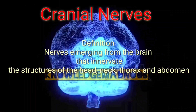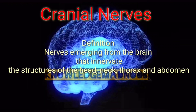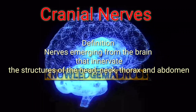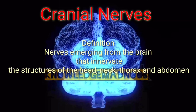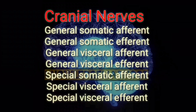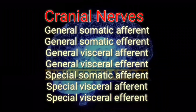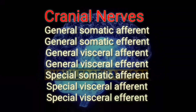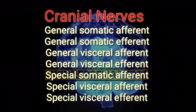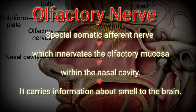Cranial nerves innervate the structures of the head, neck, thorax, and abdomen, supplying sensory and motor functions to these regions. Only the vagus nerve extends beyond the neck to innervate thoracic and abdominal viscera. Cranial nerves can be classified as: general somatic afferent, general somatic efferent, general visceral afferent, general visceral efferent, special somatic afferent, special visceral afferent, and special visceral efferent.